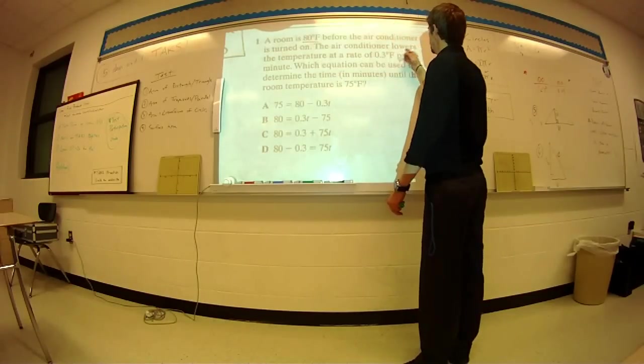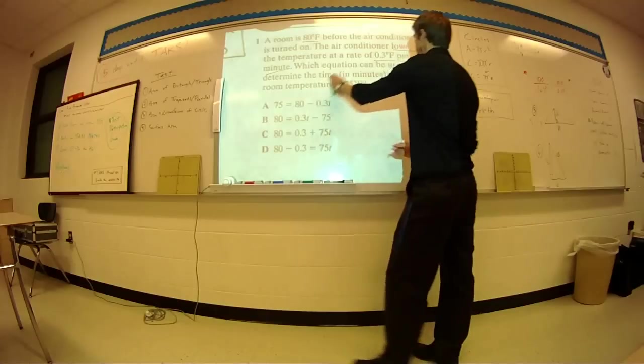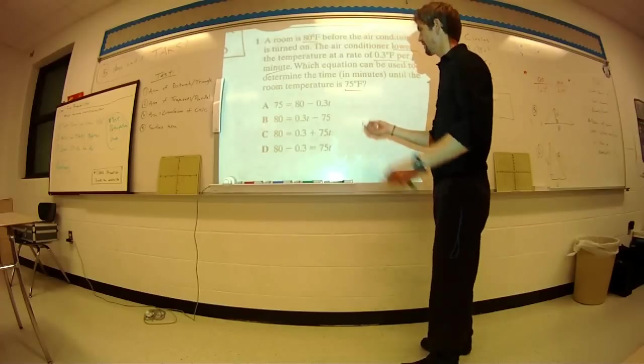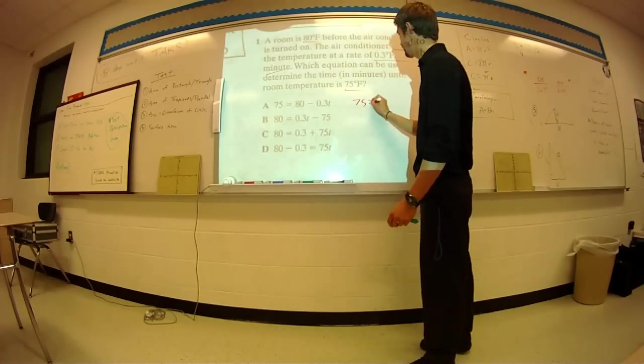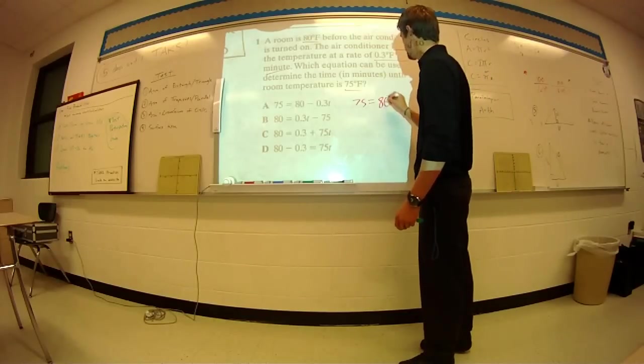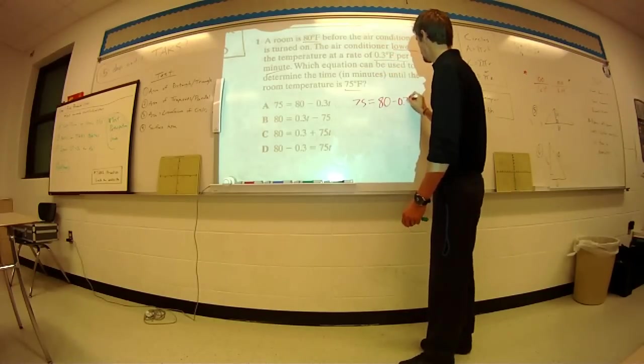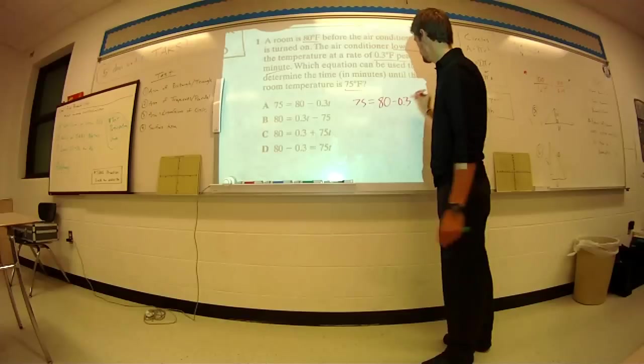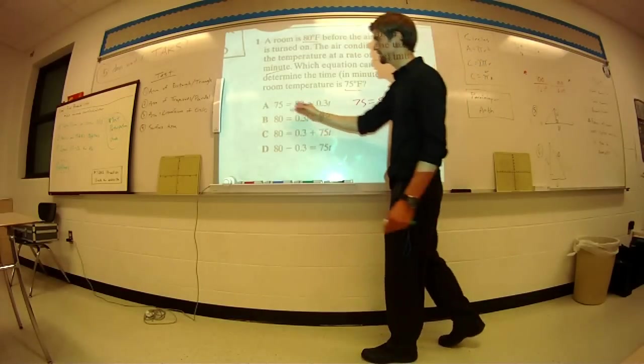The important thing is it's 80 degrees. It lowers at 0.3 per minute. We're trying to figure out when the temperature equals 75. It starts at 80, then it goes down, it lowers at 0.3 degrees per minute. Minute we're going to call T. So which one of those? 75 equals 80 minus 0.3T.